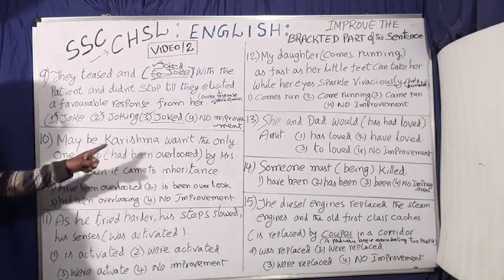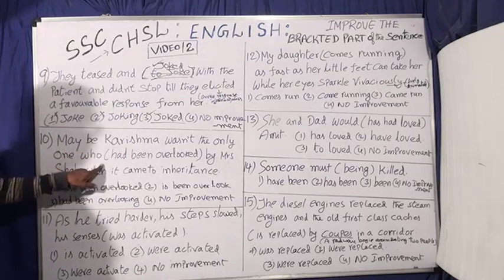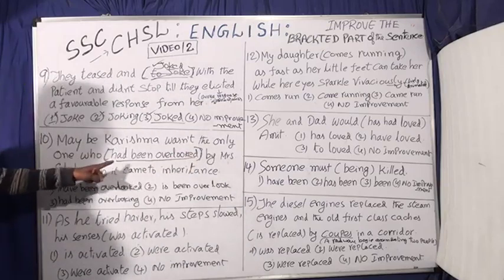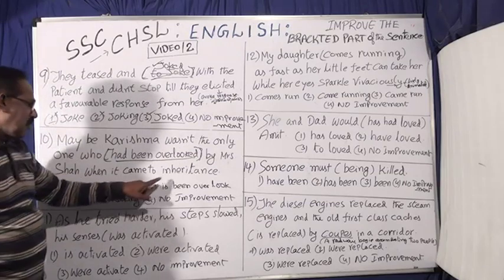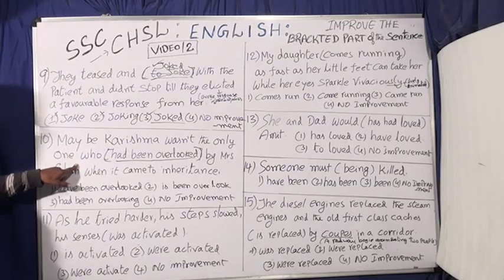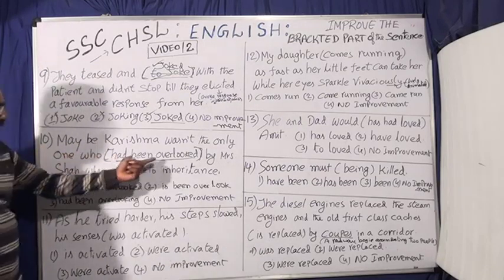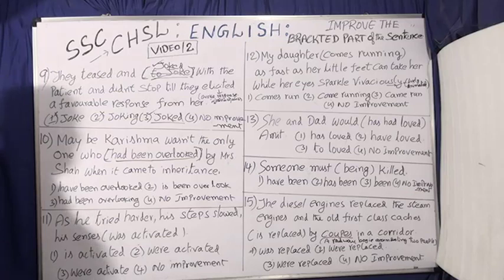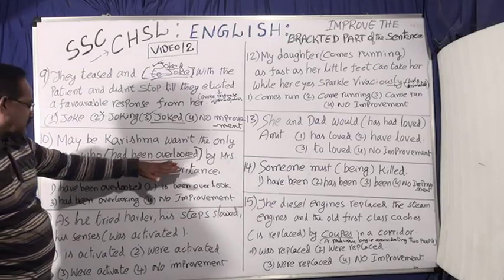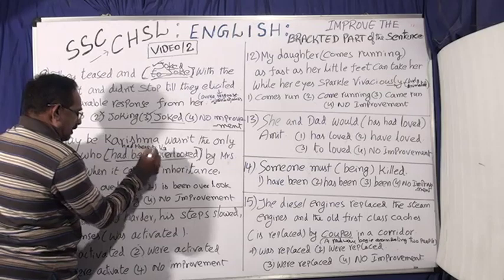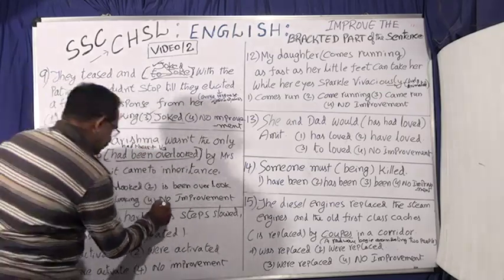Question ten: Maybe Karishma wasn't the only one who — bracket part — 'had been overlooked' by Mrs. Shah when it came to inheritance. By looking at the question, it is in the passive voice: 'by Mrs. Shah' is the passive construction. 'Had been overlooked' uses the past participle — had been plus verb three. This is the correct form. So your answer is no improvement, option four.